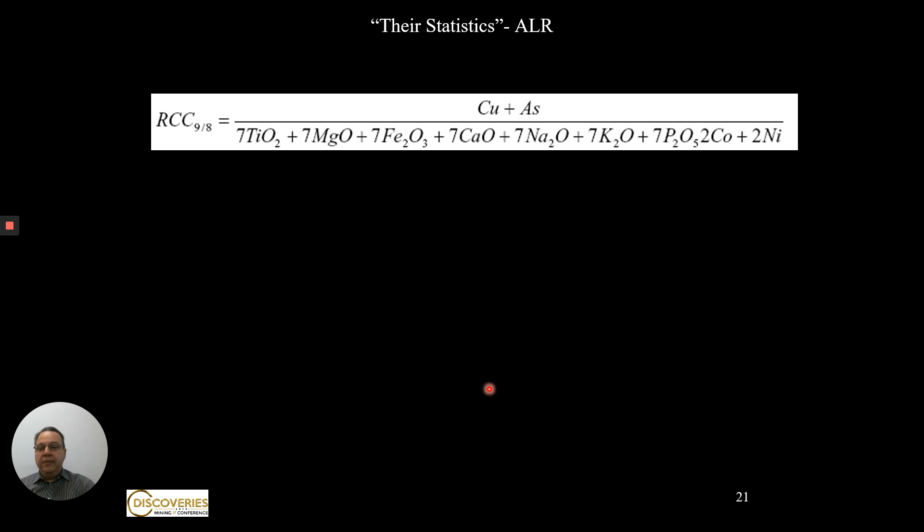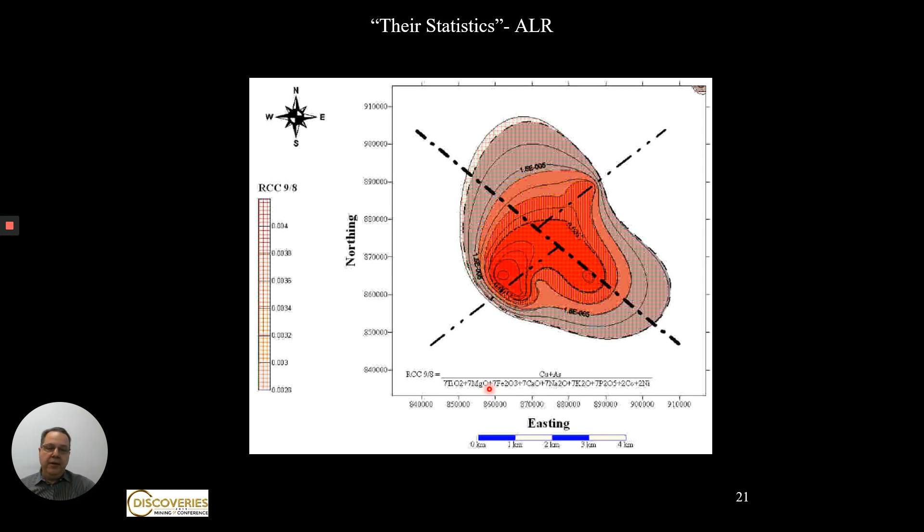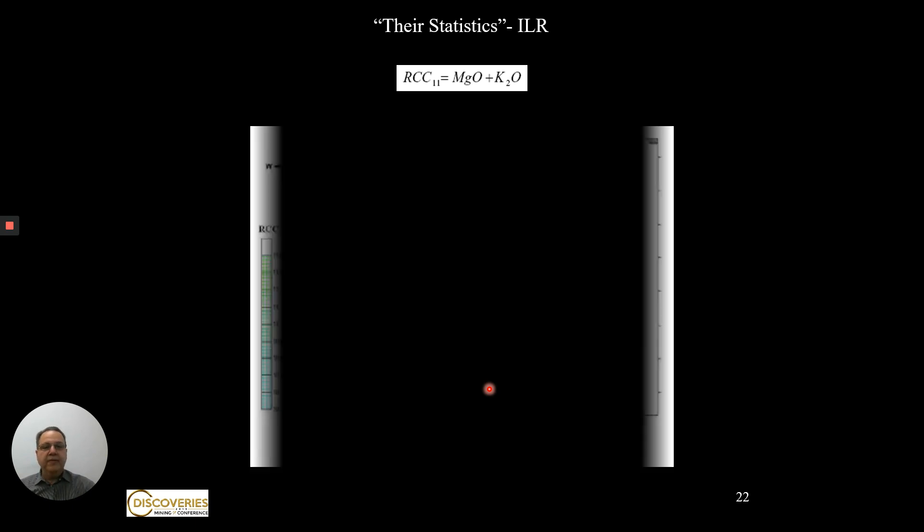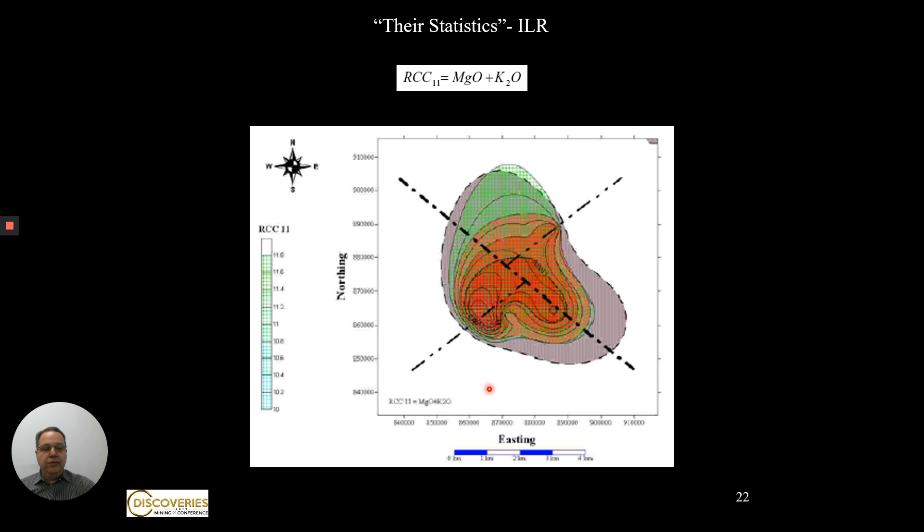As I mentioned, they have other algorithms, the ALR and the ILR. The ALR, that's the coefficient, that's the map, almost a perfect match. And the ILR, which is the best, a little bit more complex. That is your result. As you can see, you are really concentrating on the center of the anomaly.